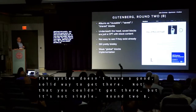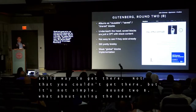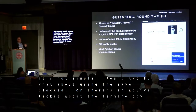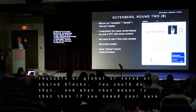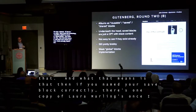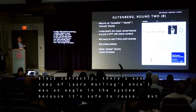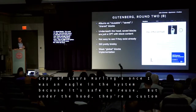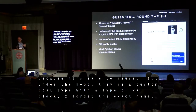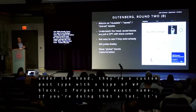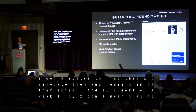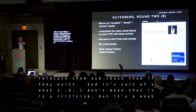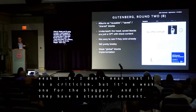Round 2B: what about using saved blocks — also called reusable, global, or shared blocks? You could do that, meaning there's only one copy of, say, Laura Marling's 'Once I Was an Eagle' in the system as a saved block everyone can access. But under the hood, saved blocks are basically a custom post type with a type of WP block. If you're doing that a lot, you'll get a lot of blocks of different kinds, creating a messy system. It's a solid 1.0 implementation — great for a blogger reusing a 'subscribe to newsletter' element — but for truly structured content, it's the wrong tool for the job.